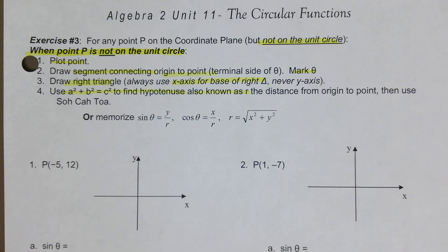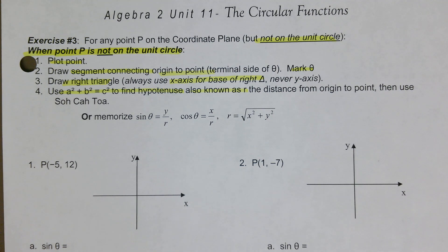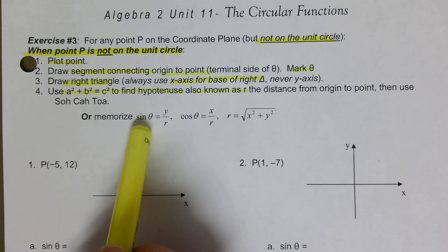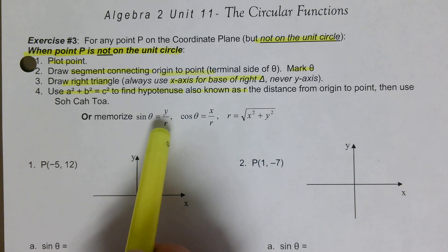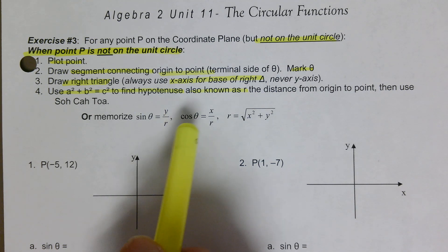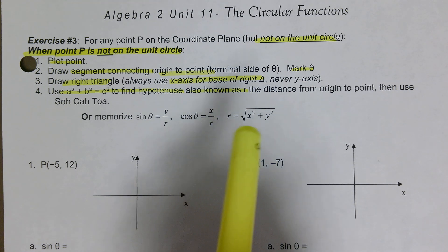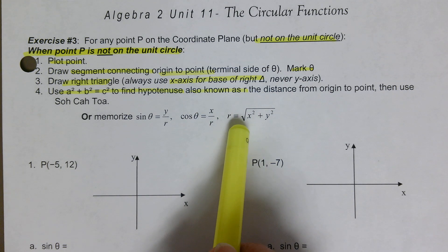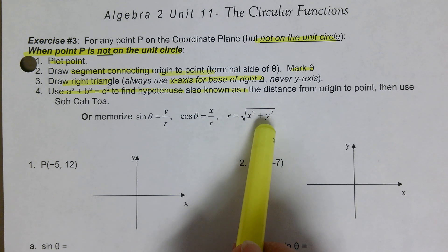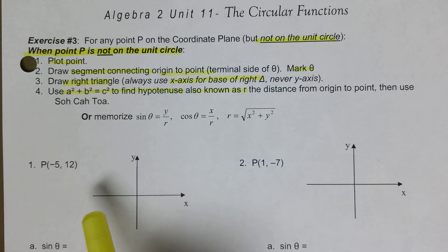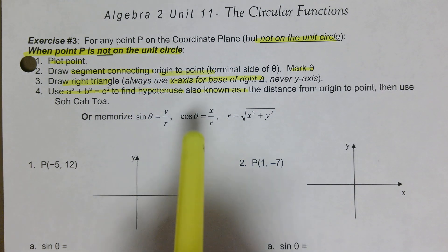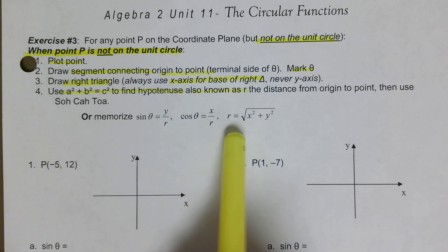Then we use SOHCAHTOA. Or we can memorize that sine of our angle equals the y-coordinate over r, cosine equals x-coordinate over r, and r equals the square root of x² + y².